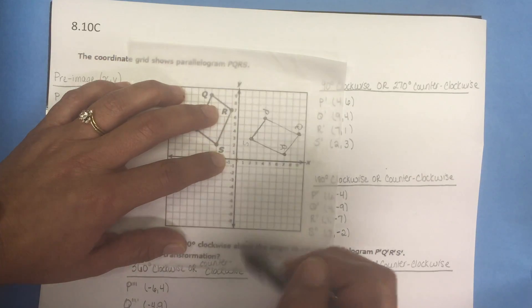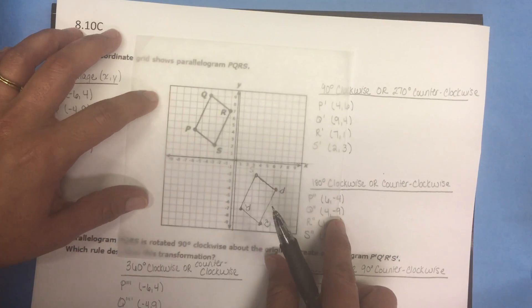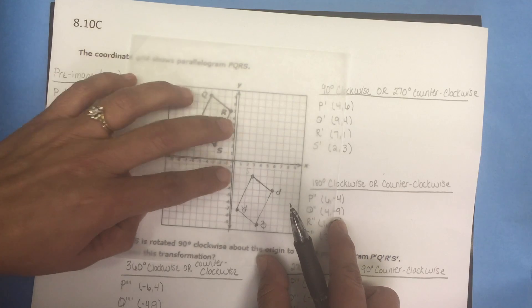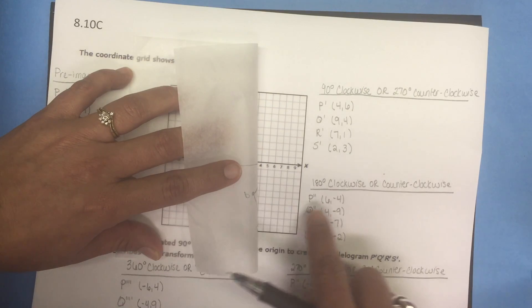Let's rotate it another 90 degrees for a total of 180 degrees and let's see where this figure ends up on the coordinate plane.